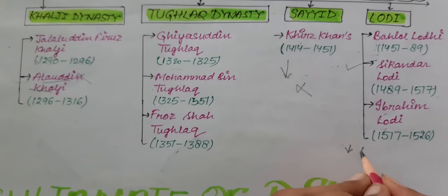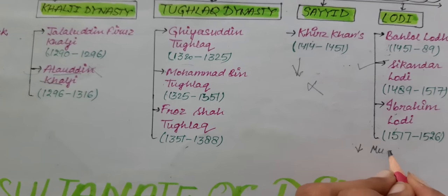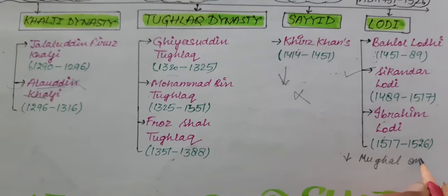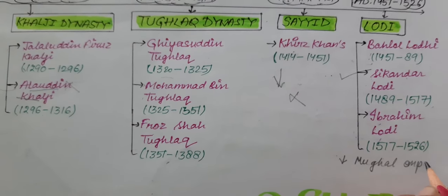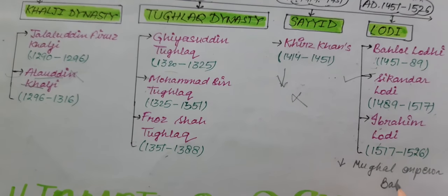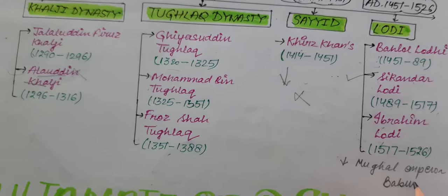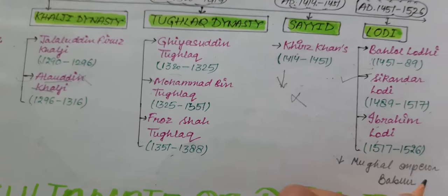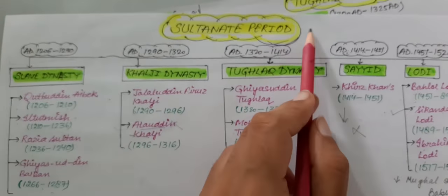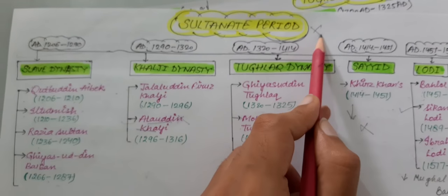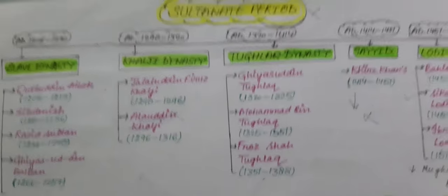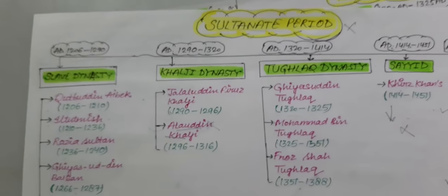Ibrahim Lodi was defeated by the Mughal Emperor Babur, and from here the entire Sultanate period came to an end and the Mughal Empire began.